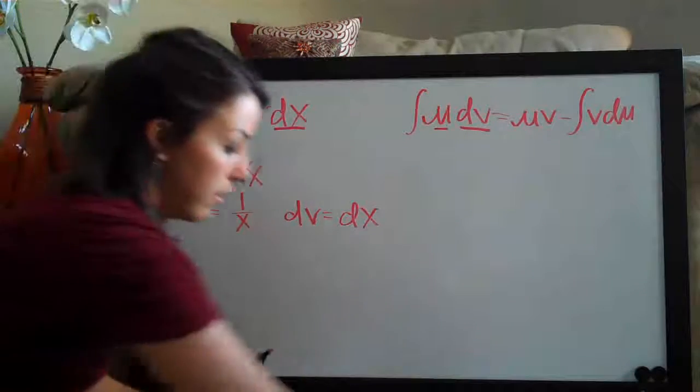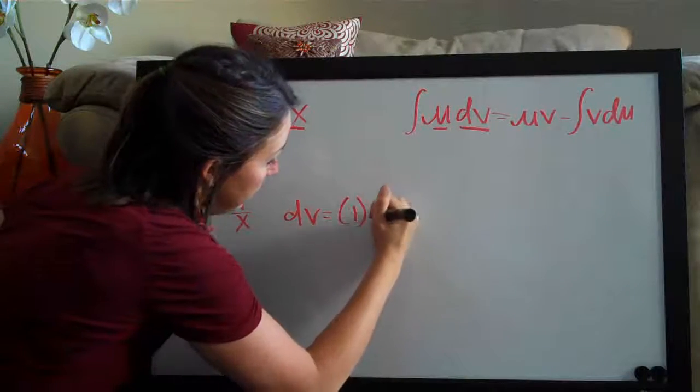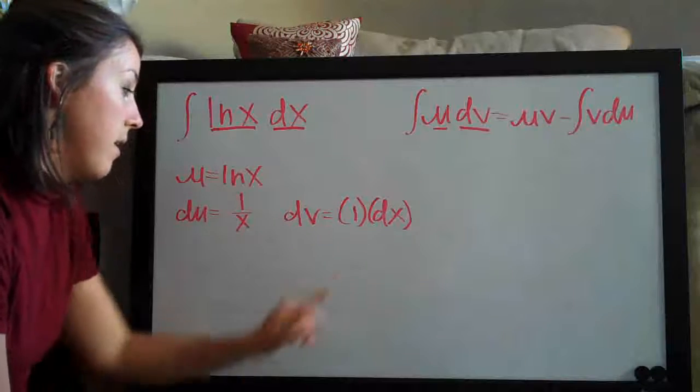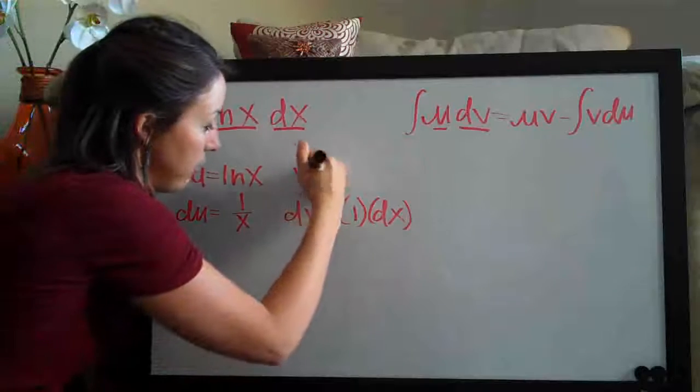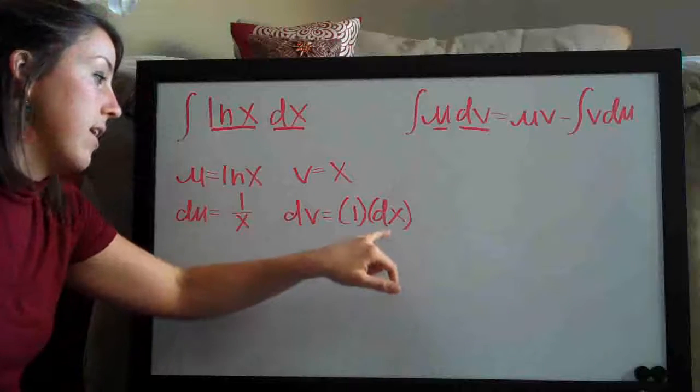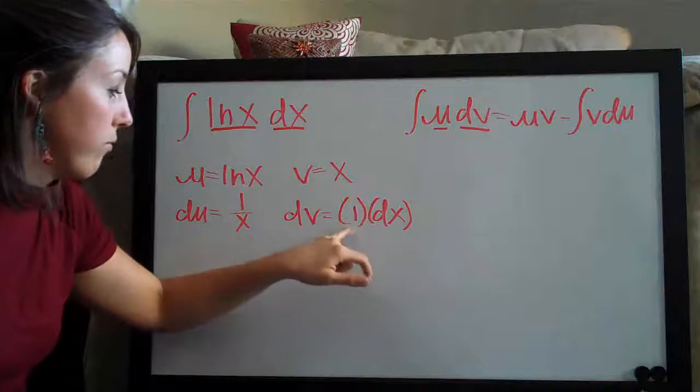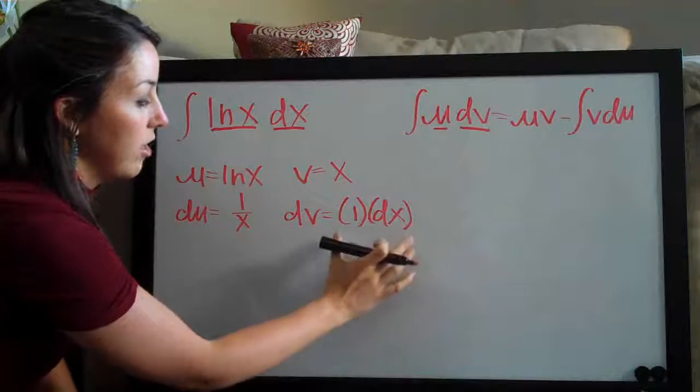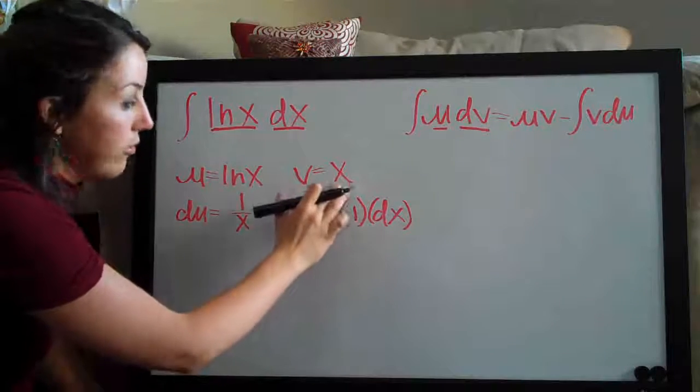You can also think of this here as 1 times dx. 1 times dx would be the same thing as dx. But I find that it helps to remember a 1 in front of it because when you take the integral, the integral of this is x, which doesn't make too much sense to me when I'm just looking at the integral of dx. That's not readily apparent, but I know that the integral of 1 is x. So I like to picture a 1 in front of this dx, but if you ever are taking the integral of dx, you can remember there's the 1, so the integral is x.